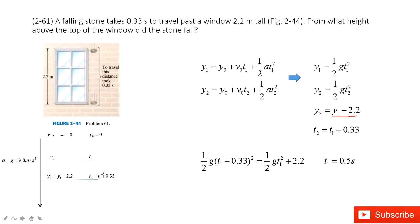After we know t1, we know t2. Now it asks from what height above the top of the window did the stone fall? So that means we need to find y1. So t1 is given.